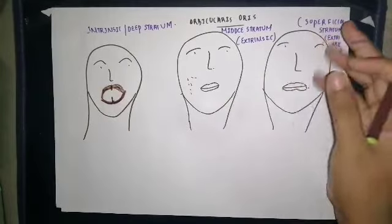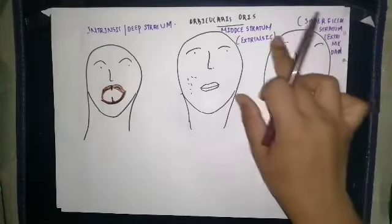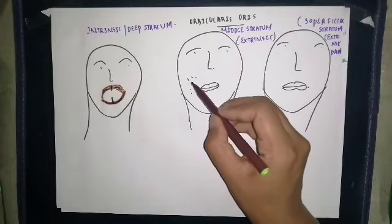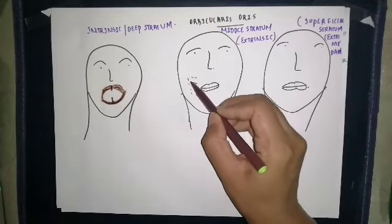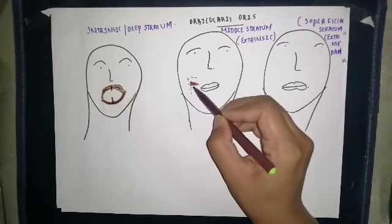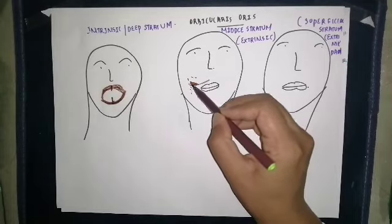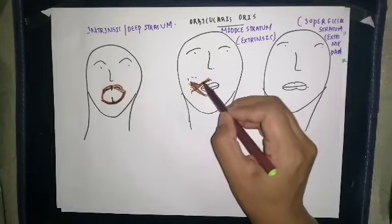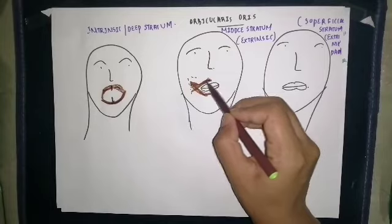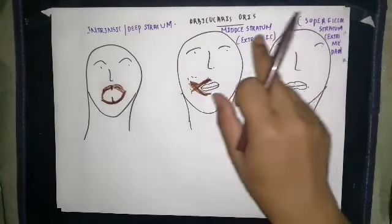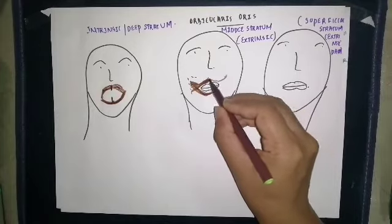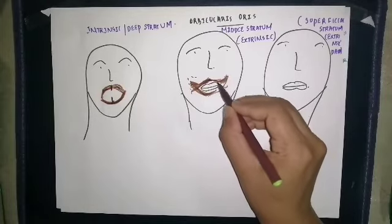The extrinsic part is derived from other muscles in the region and is divided into a medial stratum and a superficial stratum. The medial stratum of the extrinsic part is derived from the buccinator muscle — specifically the middle fibers of buccinator that decussate and contribute to orbicularis oris.